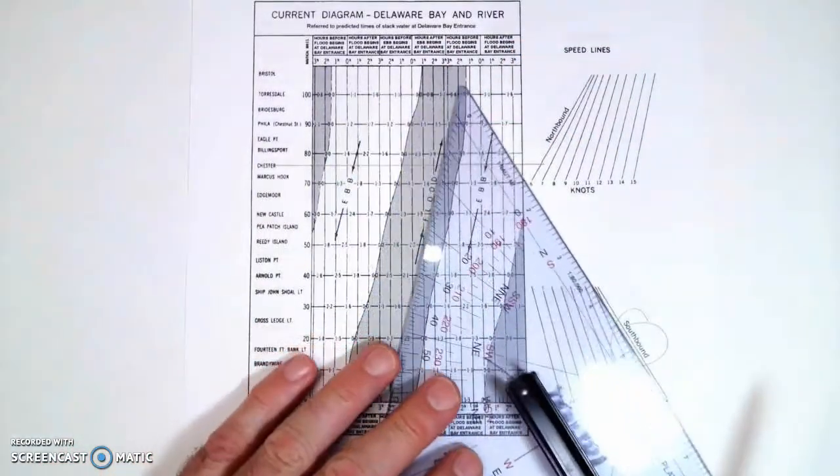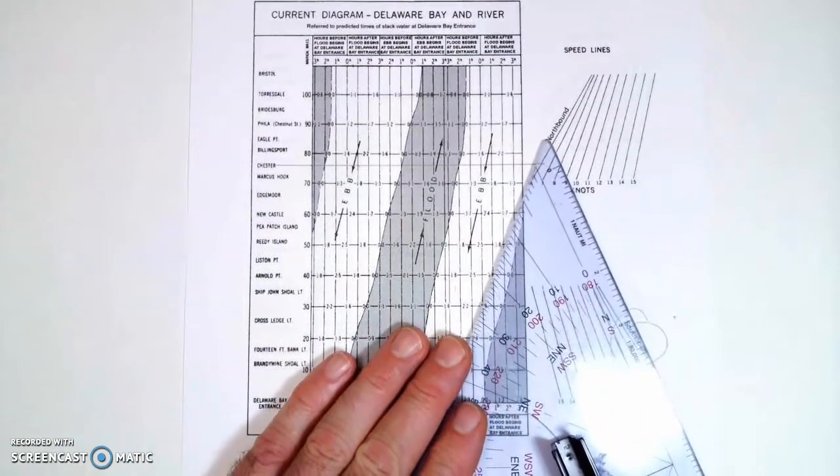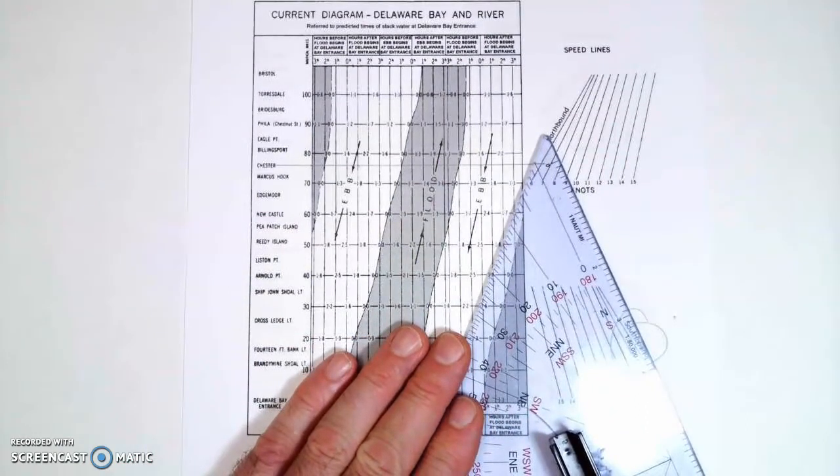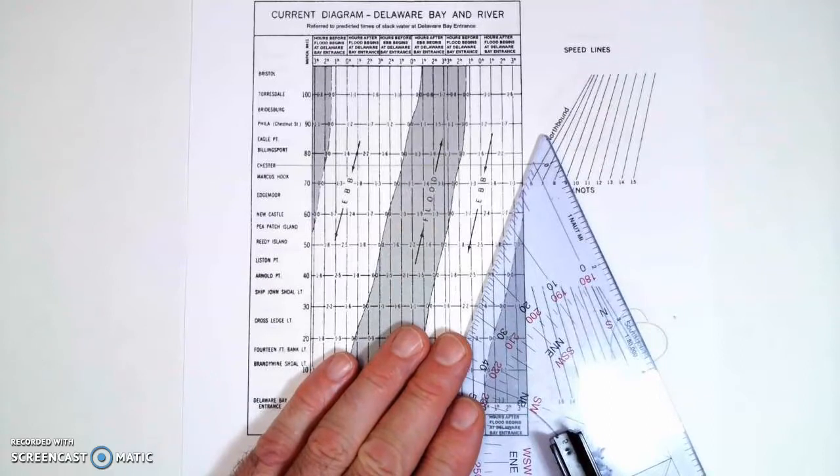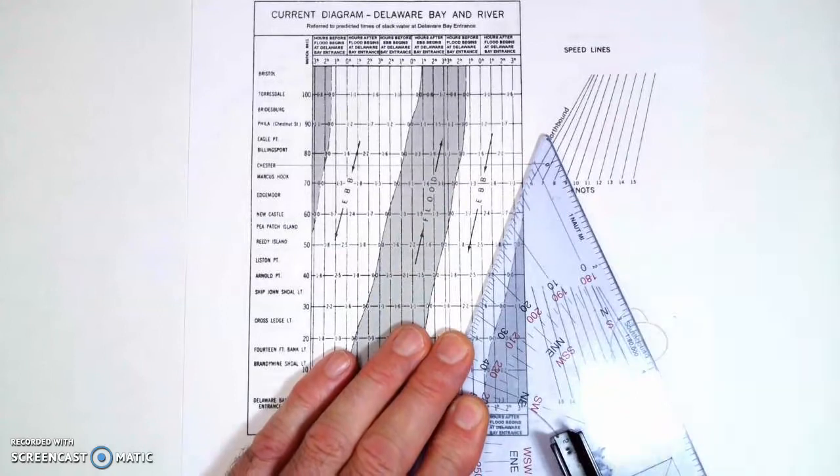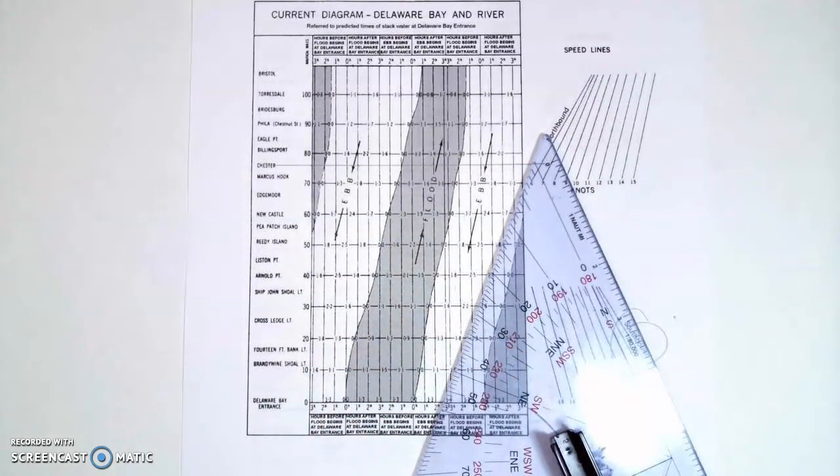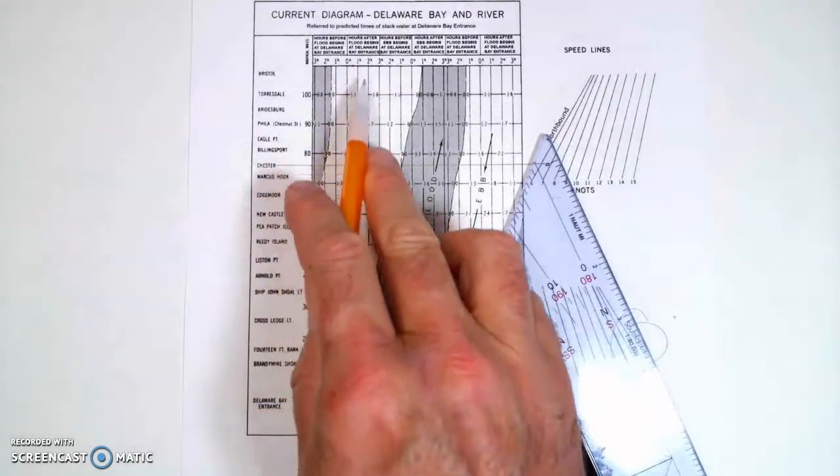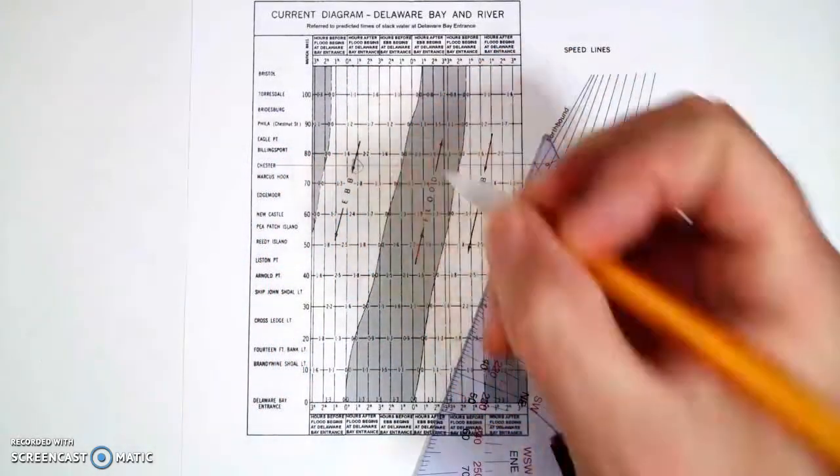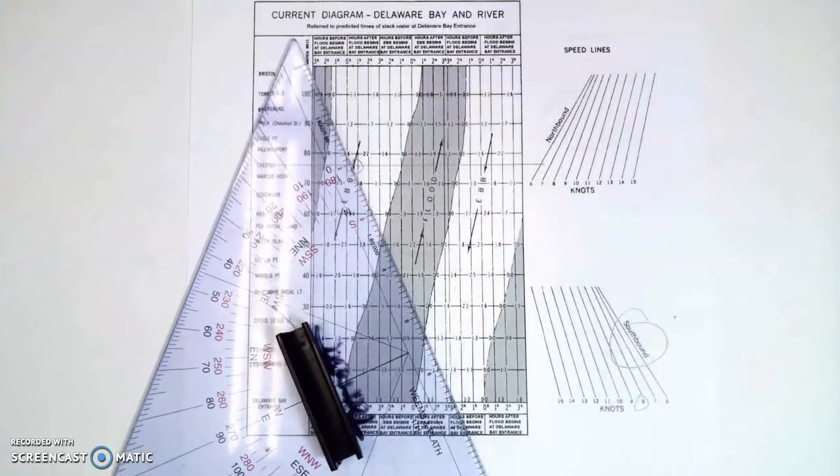Now I need to get my speed line. My speed line is eight knots. So I'm going to take my triangle and line it up on the eight knot speed line over here. I'm using this thin black line instead of the edge. Now I'm going to slide that over until I intersect Chester and one hour after. So here's where I'm going to intersect with the edge of my triangle.